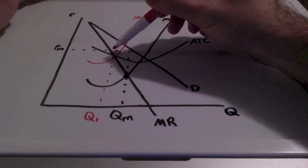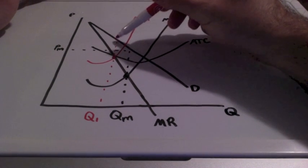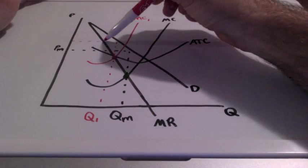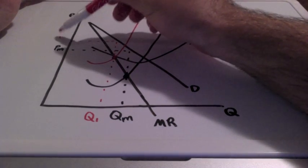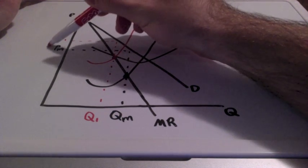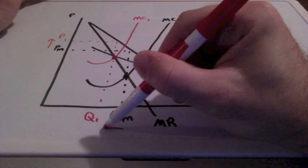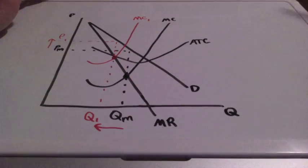And we bring this up to demand, which represents our new price. So as you can see, prices would go up and quantity would go down.